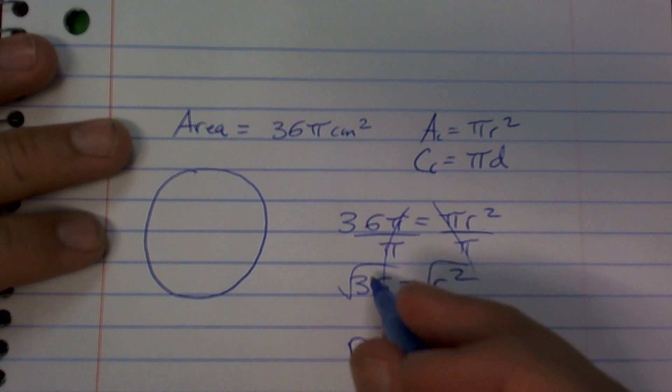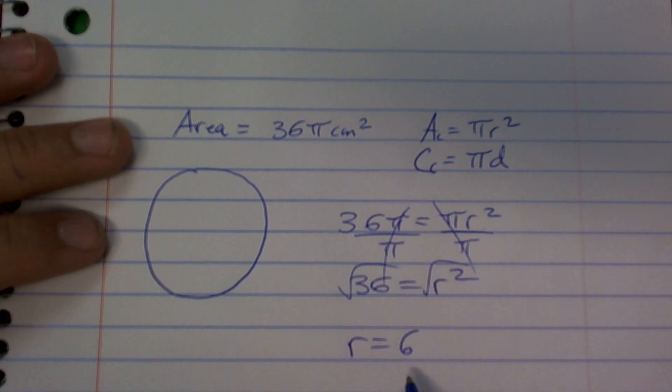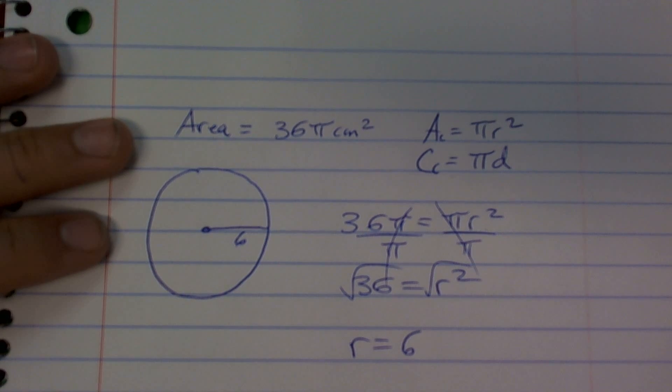So r equals square root of 36. Since we're dealing with the distance, it's going to be a positive 6. So that means the distance from here to here is 6.